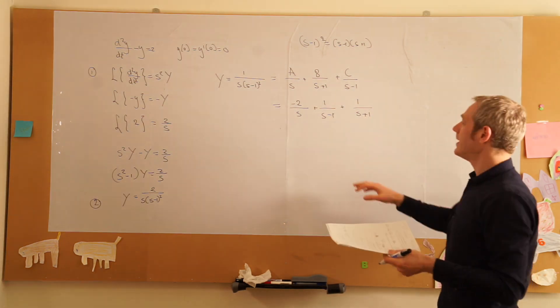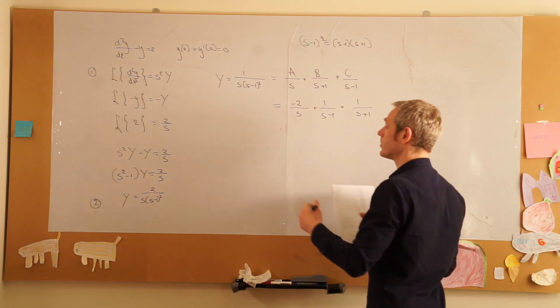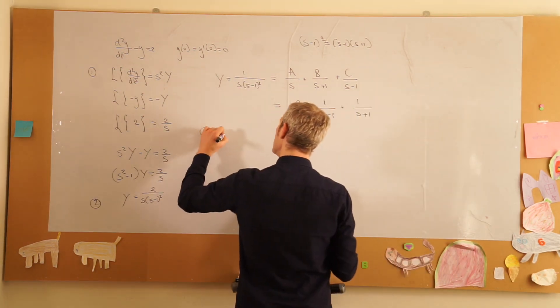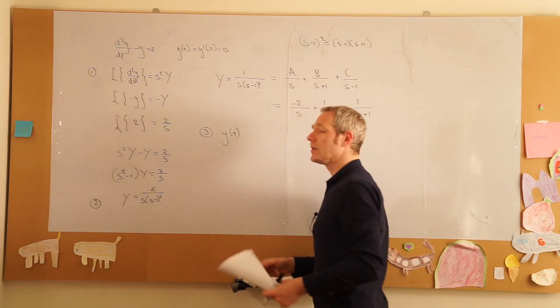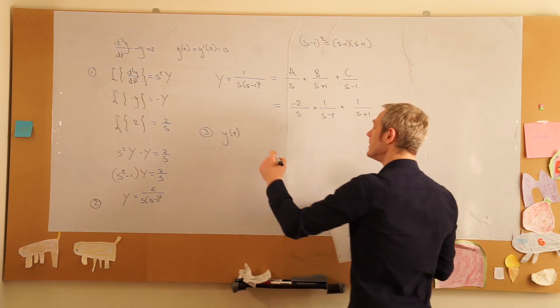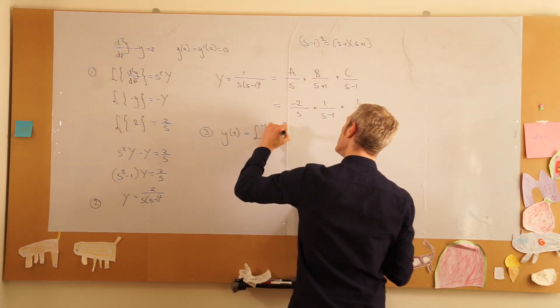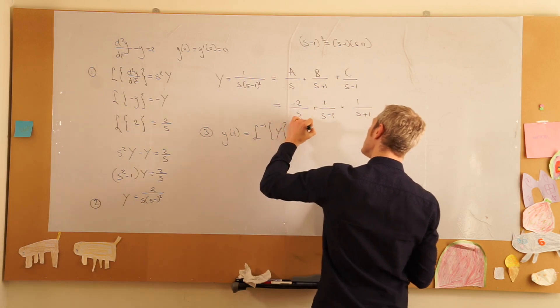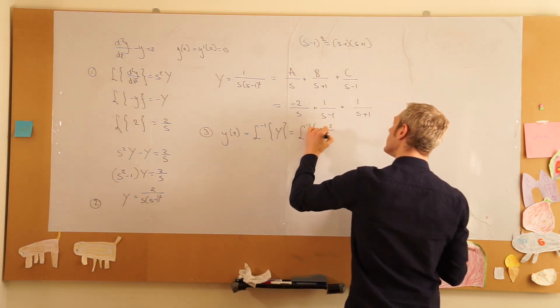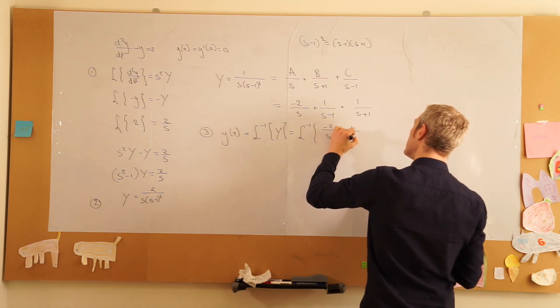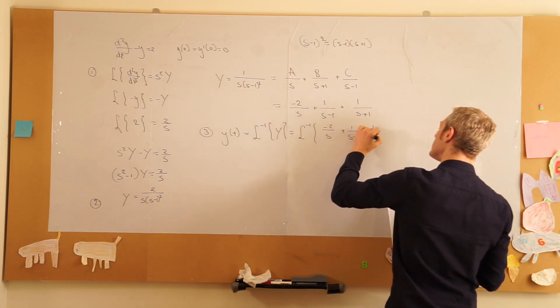And now we can take the inverse Laplace transform. So step 3, the function we were after y(t) is equal to the inverse Laplace transform of Y, which is equal to the inverse Laplace transform of minus 2 over s plus 1 over (s minus 1) plus 1 over (s plus 1).